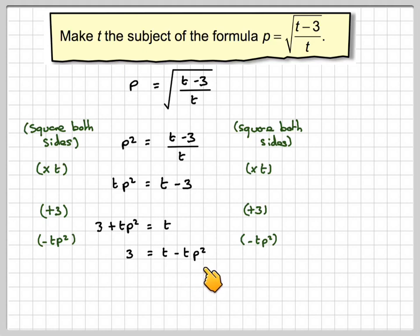As I want t as the subject, I need to factorise out the t. So we're going to get 3 is equal to t times 1 minus p squared.